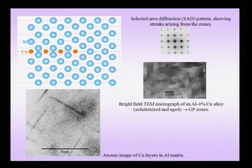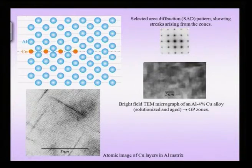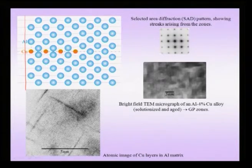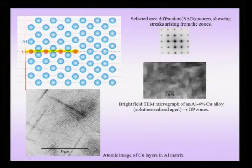Consider the half picture of the GP zone — the GP zone itself extends the other way about a mirror plane, the mid plane. This is my disc of copper atoms right in the middle. The GP zone is a copper-rich zone and can be thought of as a precursor to a precipitate.